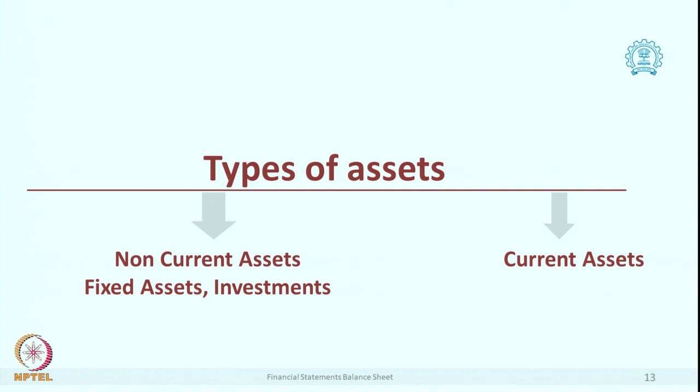Now coming to the types of assets. As we know there are two major types: one is non-current, the other is current. Non-current means those which are likely to last for more than one year, with the major examples being fixed assets and current assets. Do you remember what is meant by fixed assets? When we discussed the money cycle, we had started with the first asset which is fixed asset. It is a kind of infrastructure using which the company does its business.